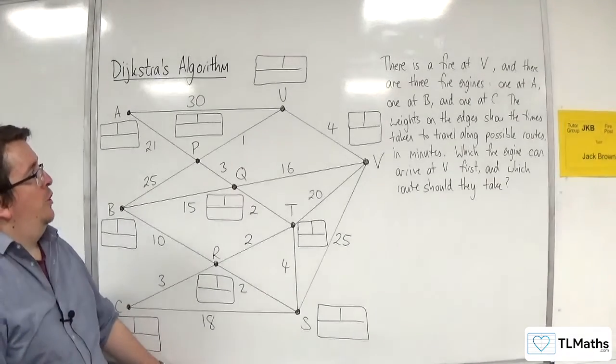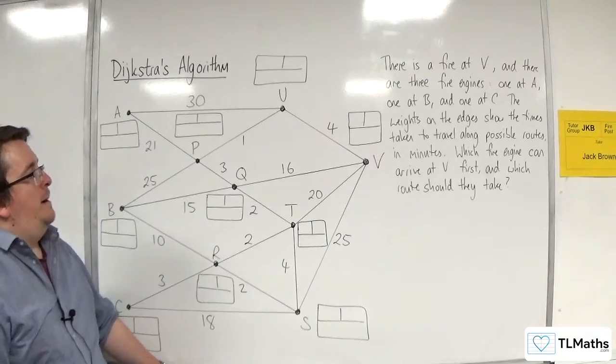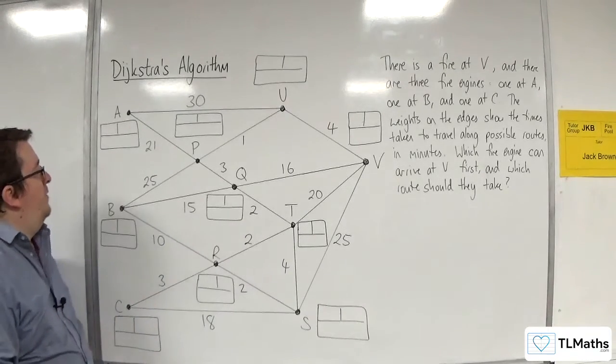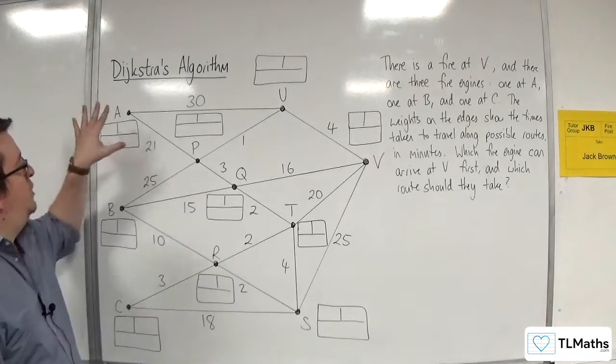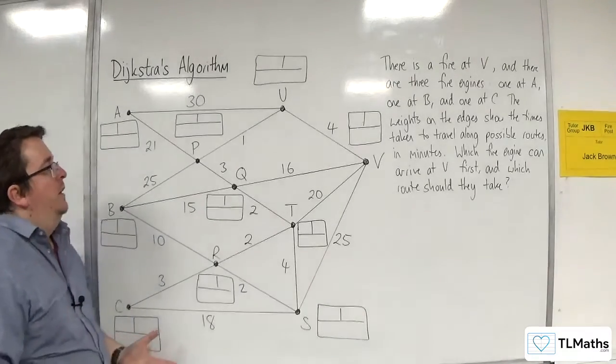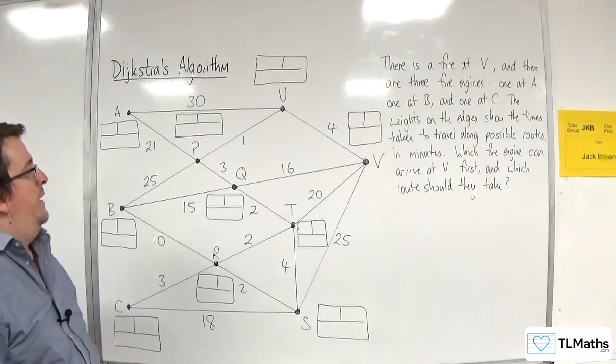Which fire engine can arrive at V first, and which route should they take? Now, this type of problem can look quite daunting because you've got three fire engines, and so you might think that means I've got to do Dijkstra's three times. But perhaps you're only given one grid, so how do we deal with this?